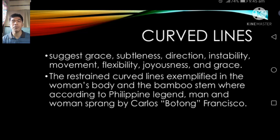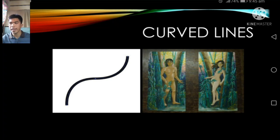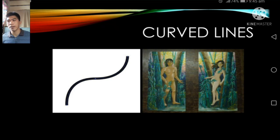Curved lines suggest grace, subtleness, direction, instability, movement, flexibility, joyousness, and grace. The restrained curve lines are exemplified in the woman's body and the bamboo stem, according to Philippine legend — as depicted in the painting by Carlos Botong Francisco, where the postures and positions of people show curve lines in their hands, feet, and legs.